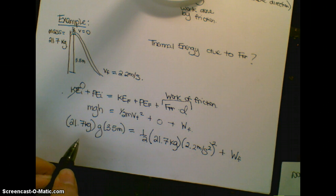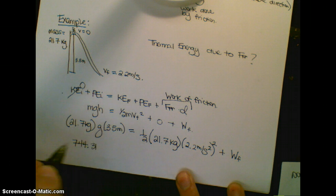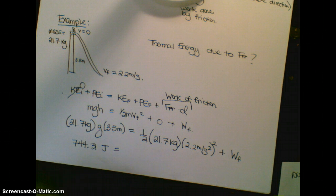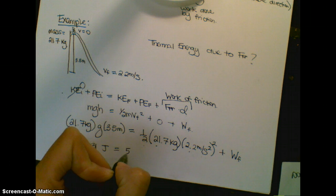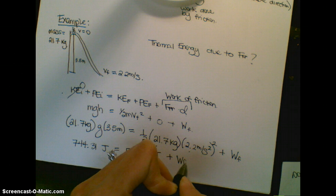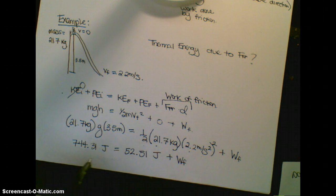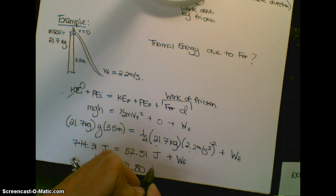So of course, I'm going to use my calculator to find all of this. I have 21.7 times 3.5 times 9.8. I get 744.31. This is in joules. And I have one-half times 21.7 times 2.2 meters per second squared. And for this, I get 52.51 joules. And then I also have my work by friction. Now I can solve for my work done by friction. Minus 52 on each side, 52.51. And I solve for this. I get 691.80 joules.